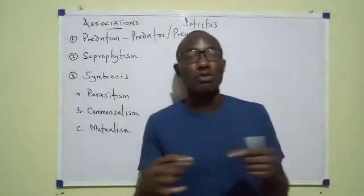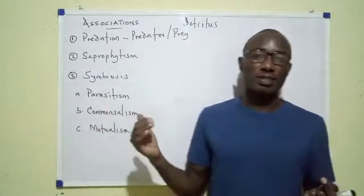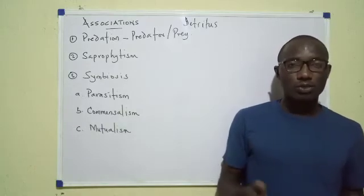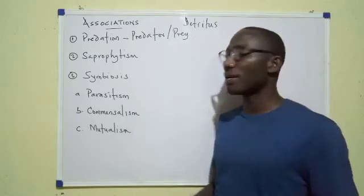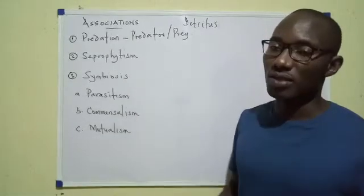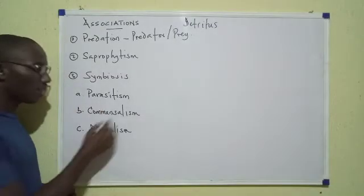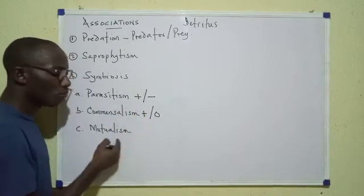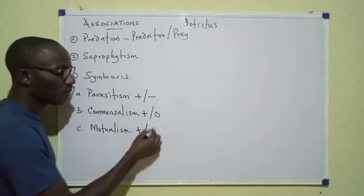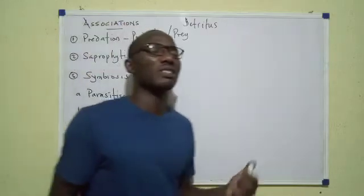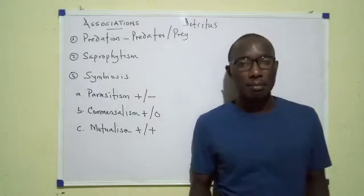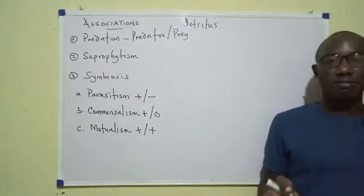For symbiosis — 'symb' meaning together, 'bios' meaning life — you have organisms that practically live together. The type depends on the form of symbiosis. I'll use symbols: parasitism is a plus-minus relationship, commensalism is plus-zero, and mutualism is plus-plus. Plus means an organism benefits, minus means an organism suffers harm, and zero means an organism is unaffected.